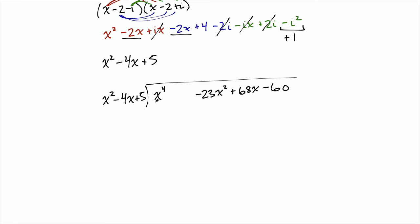So to do this division, we take our x to the fourth and we divide it by x squared. That leaves us with x squared, that's what goes on top. And we take that and multiply it by this divisor. So we get x to the fourth minus 4x cubed and then plus 5x squared. And we subtract. The x to the fourth cancels. I've got nothing here and then minus a negative is plus 4x cubed. Negative 23x squared minus 5x squared is minus 28x squared. And then the 68x and the minus 60 come down.